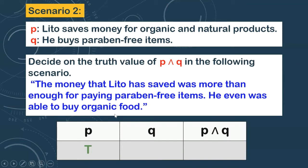Now let's find the truth value of Q. Proposition Q is 'He buys paraben-free items.' And yes — he had enough money for paying paraben-free items. So Q here is also true. Therefore, the truth value of P and Q is also true. That is the truth value of P and Q given this scenario.